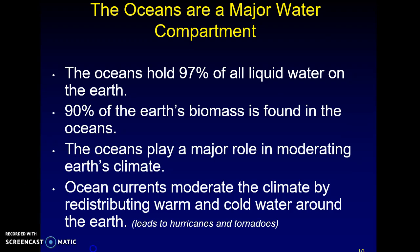The oceans hold about 97% of all liquid water on Earth. If someone comes up with a cheaper way of desalination, they're looking at being the next multi-billionaire. About 90% of the Earth's biomass is in the ocean — it contains more life per square inch than land mass. Oceans also play a vital role in moderating the Earth's climate — we have a separate chapter for that. Ocean currents usually lead to things like hurricanes and tornadoes.